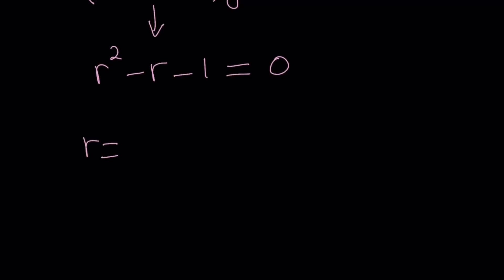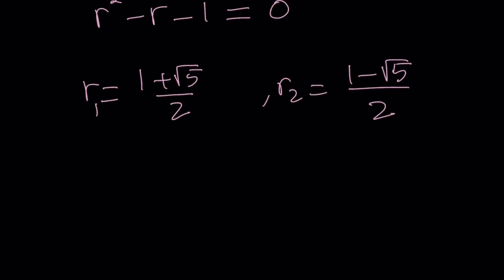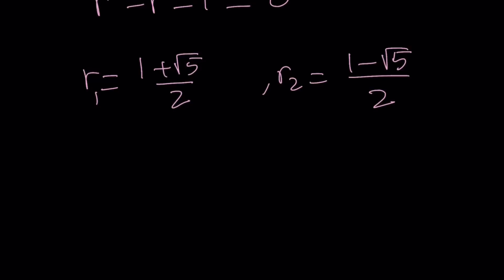So, the roots are 1 plus square root of 5 over 2, which I'm going to call r1, and r2 is going to be 1 minus square root of 5 over 2. Now, if you have r1 and r2 for a differential equation as characteristic roots, then you can basically write the solution as c1, which is a constant, times e to the power r1x, and plus c2 e to the power r2x. Here, r2 and r1 are the roots of the characteristic equation. c1 and c2 are constants.